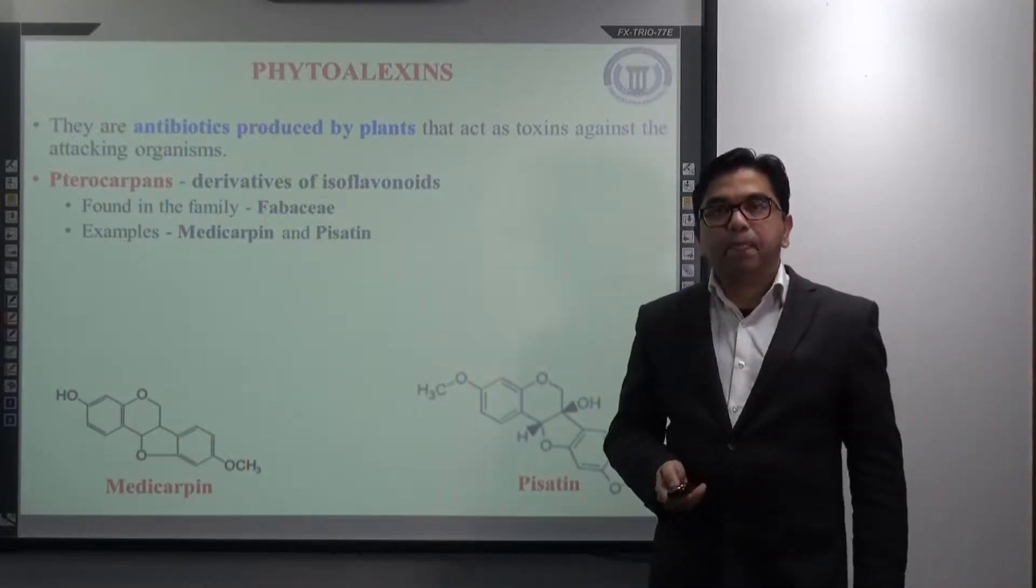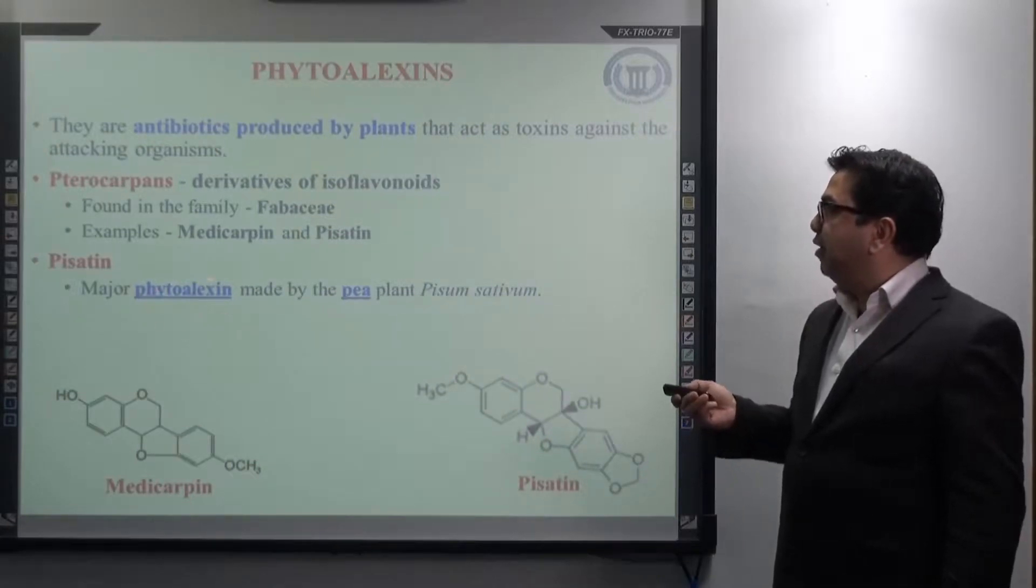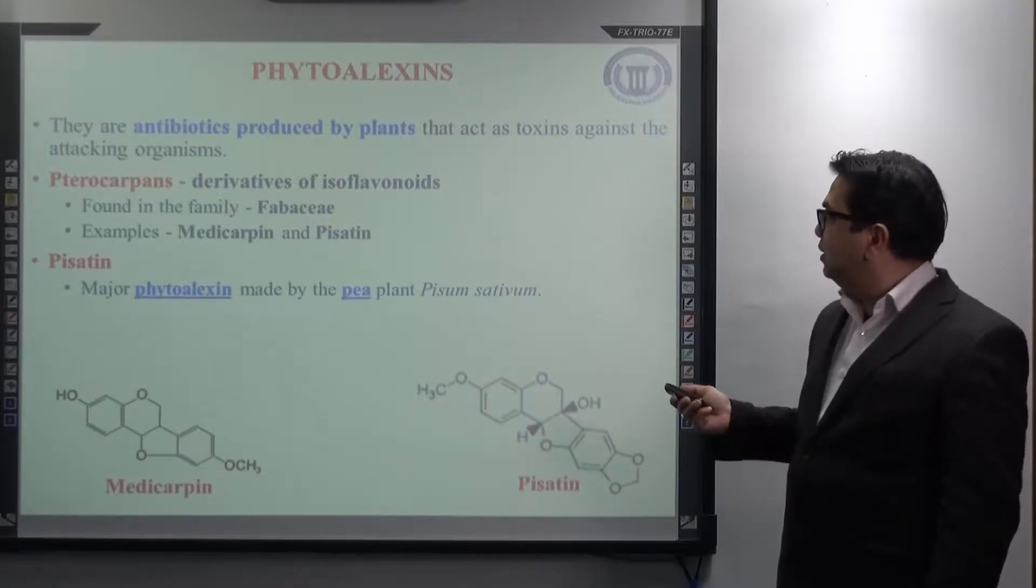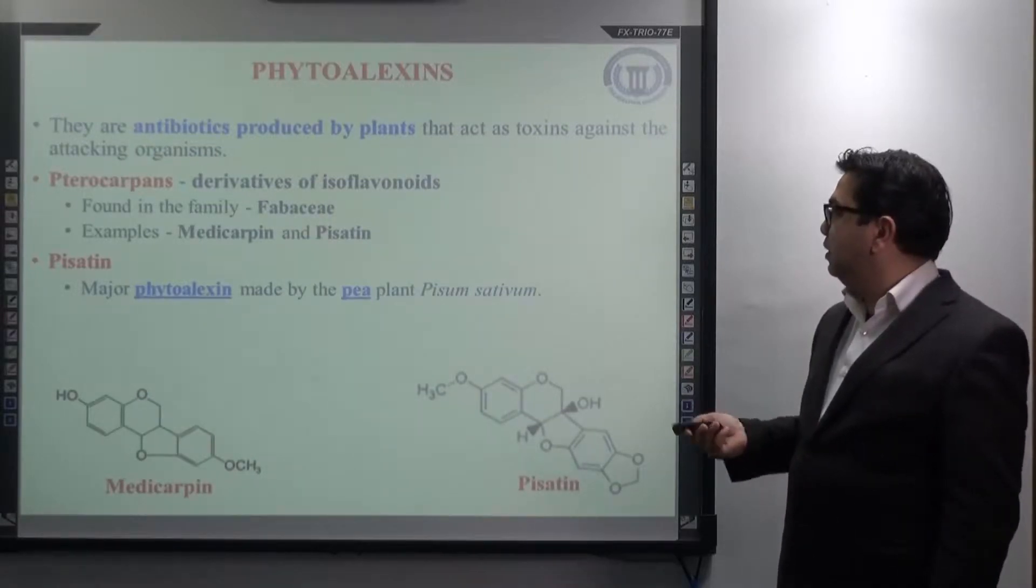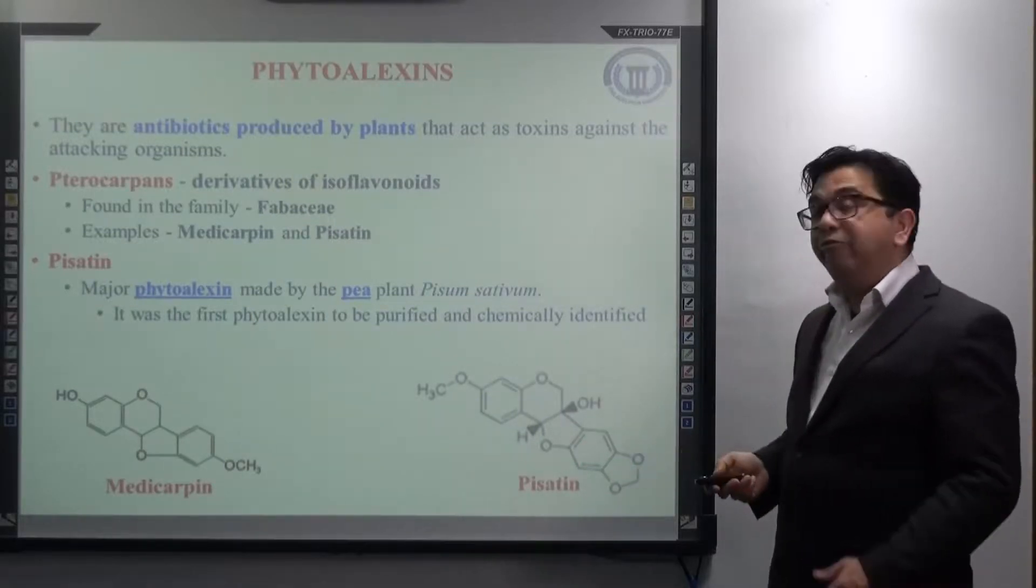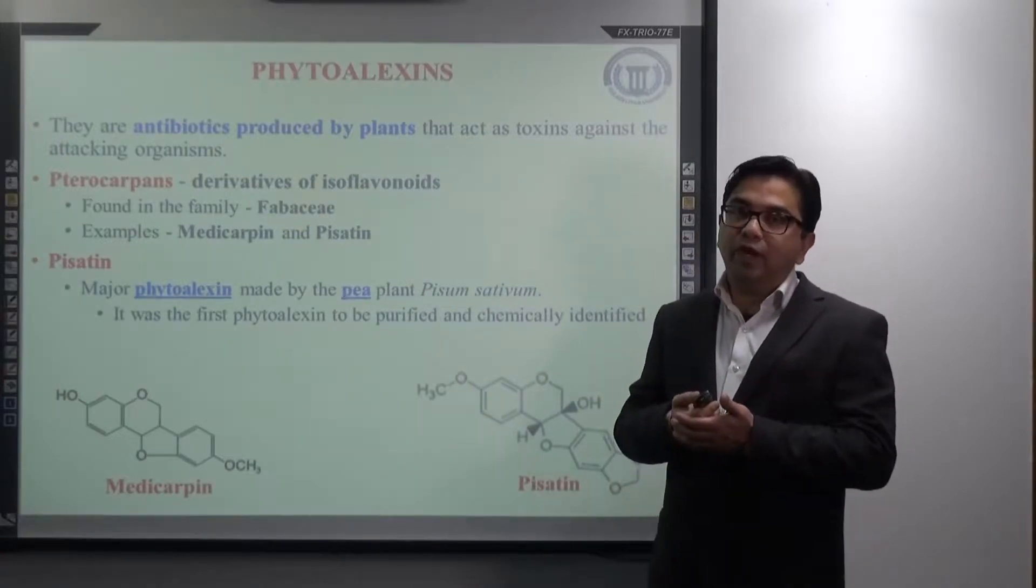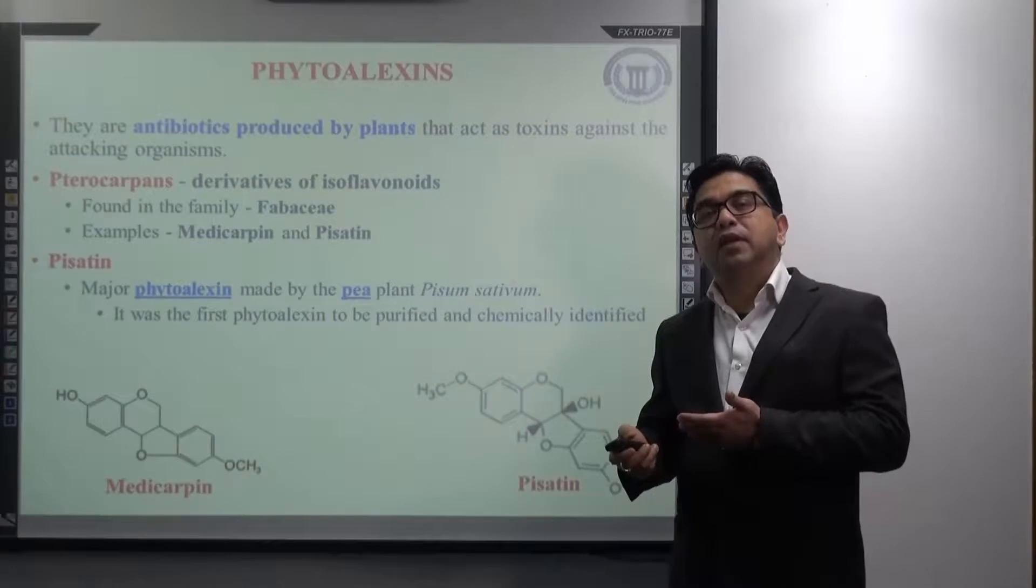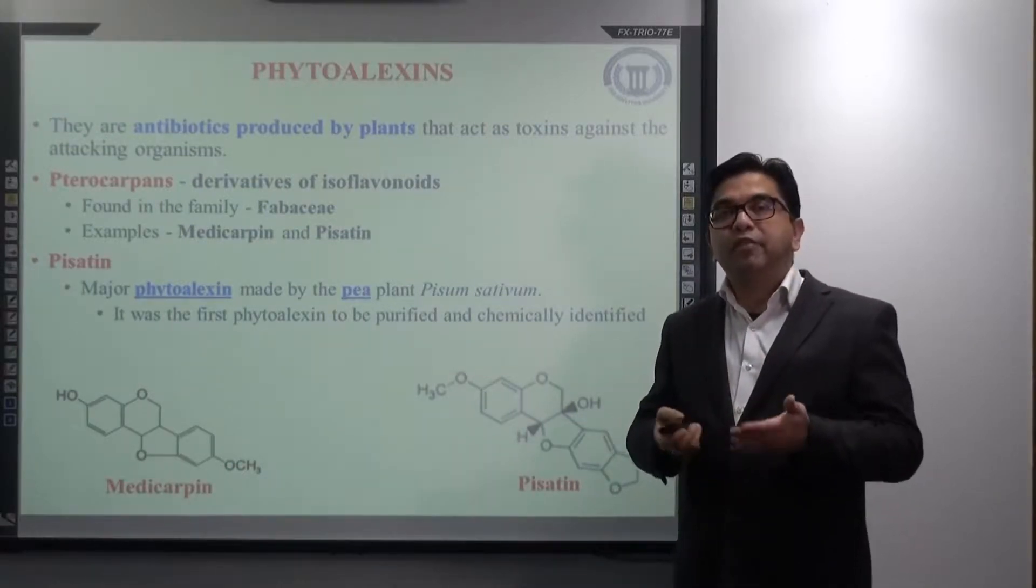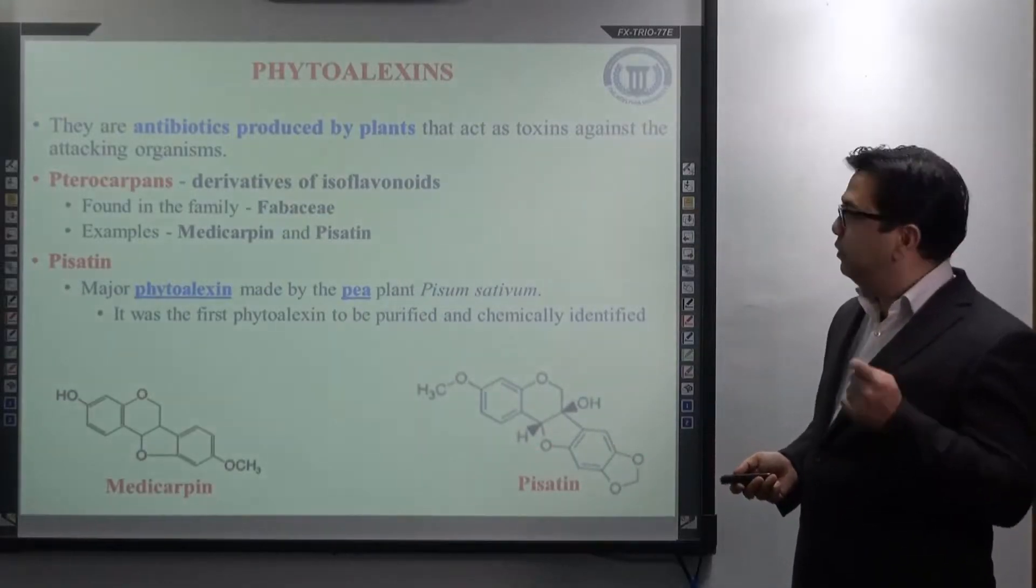Regarding pisatin, I would like to mention that it is the major phytoalexin that is made by the pea plants. Pea plant, the botanical name is Pisum sativum, and most importantly, pisatin was the first phytoalexin that was identified by the scientist and purified. After pisatin, there have been many examples of phytoalexins that have been identified and purified from plants, but pisatin is the first example of phytoalexin, remember that.